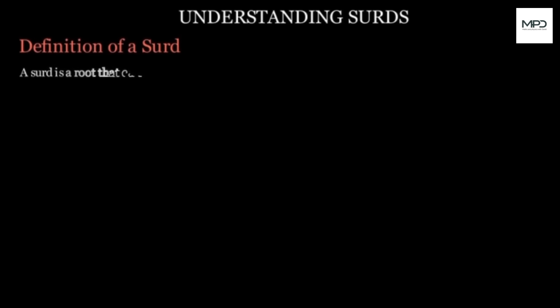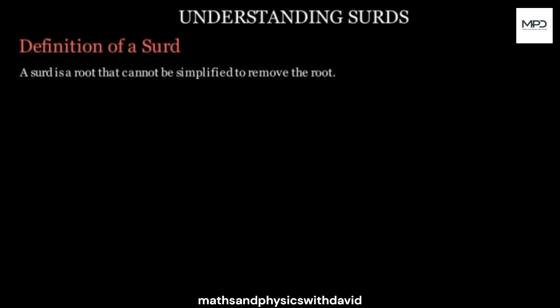What is a surd? A surd is a root that cannot be simplified to remove the root. Or simply put, a surd is the square root of a number that is not a perfect square. For instance, the square root of 2 — 2 is not a perfect square, 3 is not a perfect square, and 5 here is not a perfect cube because this is the cube root of 5.